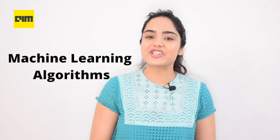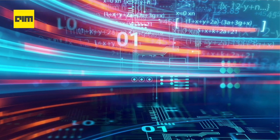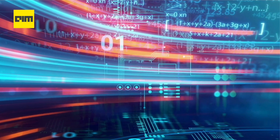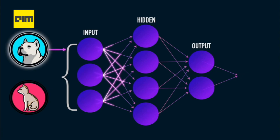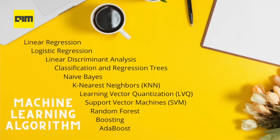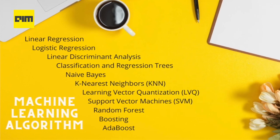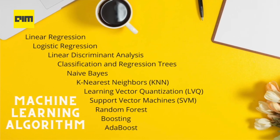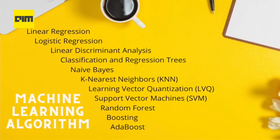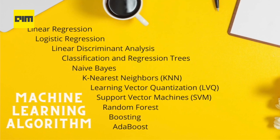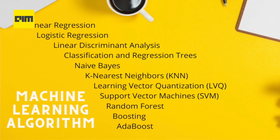Let's take a look at all the skills required to be a machine learning engineer. The first skill is machine learning algorithms. No one algorithm works best for every problem — for example, you can't say that neural networks are always better than decision trees or vice versa. Some top machine learning algorithms you should be aware of are: linear regression, logistic regression, linear discriminant analysis, classification and regression trees, naive Bayes, k-nearest neighbors, learning vector quantization, support vector machines, random forest, boosting, and AdaBoost.